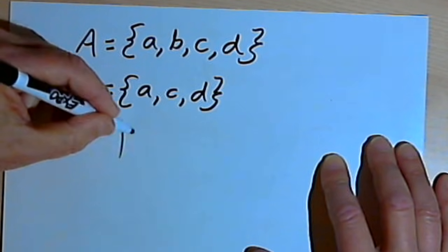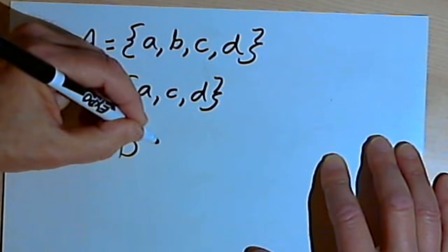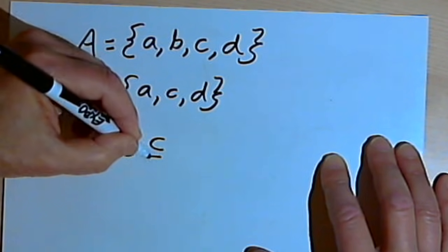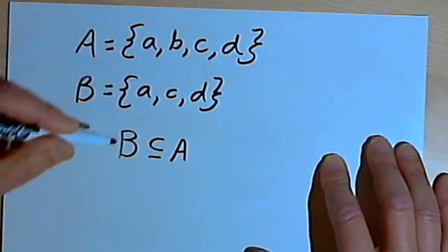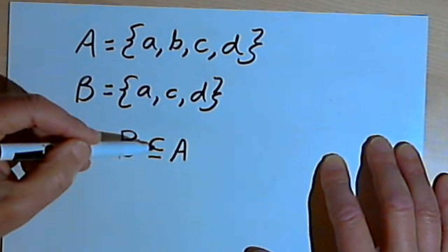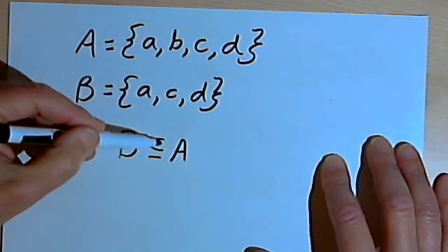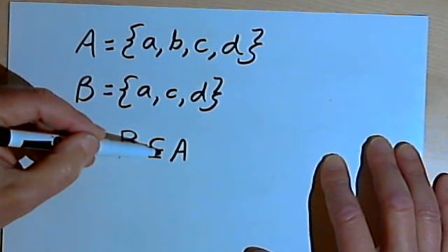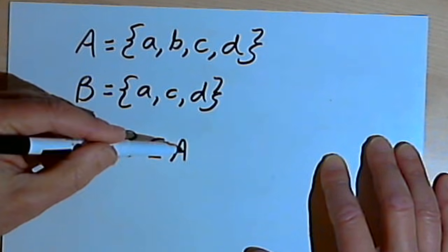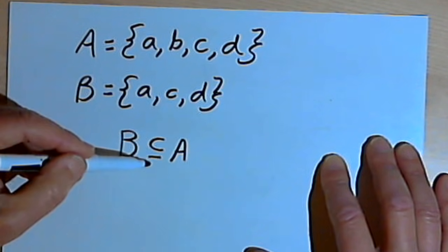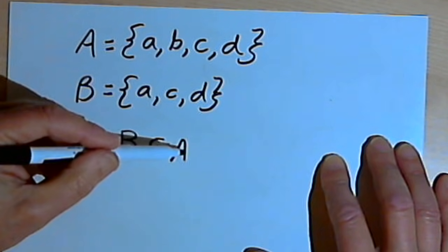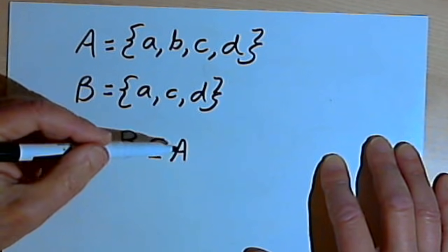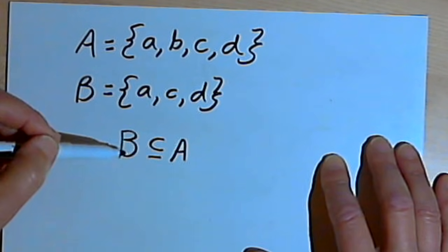I'll write that like this: B is a subset of A. I'll use the subset symbol, which is like a sideways U facing towards the A, with a bar underneath it. The A, by the way, is called the superset — it's the superset of B.